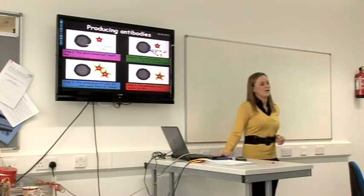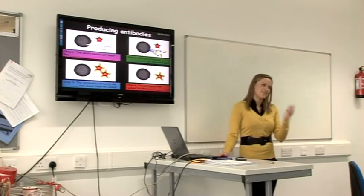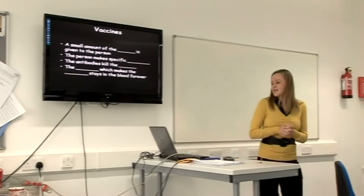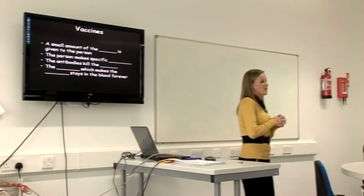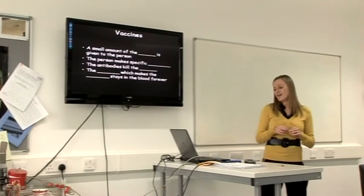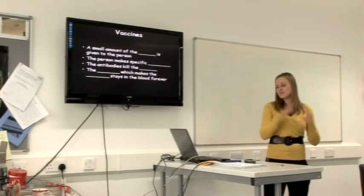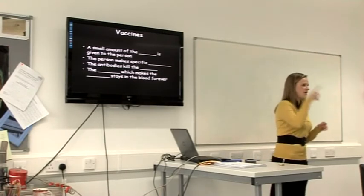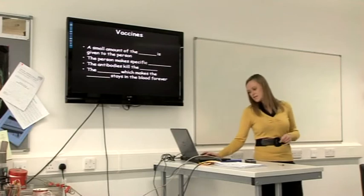Then another white blood cell can come along and eat it. In a vaccine, a small amount of the pathogen is given to the person. The person makes specific antibodies. The antibodies kill the pathogen. The white blood cell that makes the antibodies stays in the blood forever, so you have long-lasting immunity.